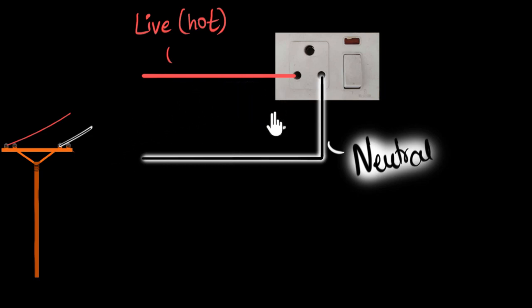We're dealing with alternating current, the current which keeps changing its direction. Once the current flows like this, then the current flows this way. So it doesn't make sense to say one wire brings in electricity, another wire brings out electricity because the current keeps on changing its direction. So what's the difference between these two wires?